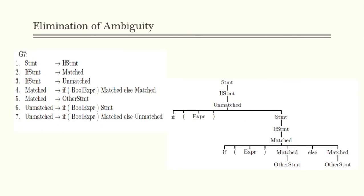This ambiguity must be eliminated. The solution is to restructure the if-else grammar by checking whether statements are 'matched' or 'unmatched'. A matched statement is one with an if-then-else, while an unmatched statement is one with only an if-then. This produces an unambiguous tree structure.